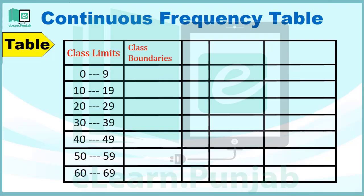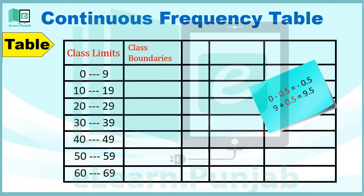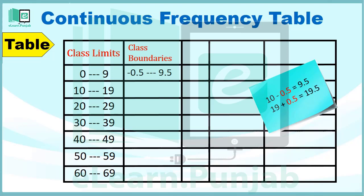अब हम Second Column Class Boundaries का बनाएंगे। Class Boundary की Value, Class Limit की Starting Value से 0.5 minus करने और Ending Value से 0.5 जमा करने से हासिल होगी। جیسا کے Class Limit کی Value 0 to 9 ہے، تو ہم 0 سے 0.5 minus کریں گے اور 9 سے 0.5 جمع کریں گے، جس سے ہمیں Class Boundary -0.5 to 9.5 حاصل ہوگی۔ اسی طرح Class Boundary کی Second Value 9.5 to 19.5 حاصل ہوگی۔